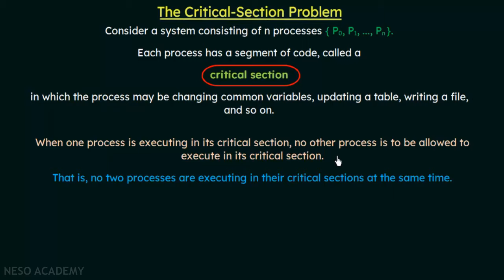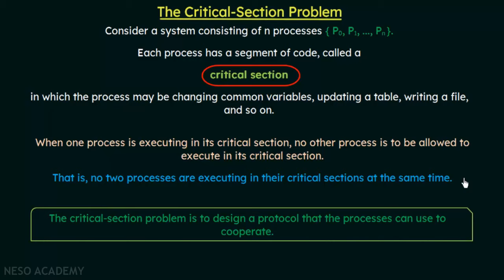When one particular process is accessing and manipulating the shared data, no other process will be allowed to access and manipulate the shared data. If this can be accomplished, then we can make sure that multiple processes will not concurrently try to manipulate the shared data. The critical section problem is to design a protocol that the processes can use to cooperate — cooperating processes are those sharing data, and they need to be synchronized to avoid data inconsistency.